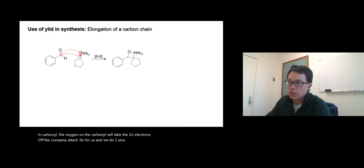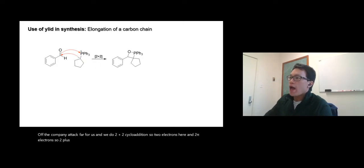We do a 2+2 cycloaddition—two electrons here and two pi electrons, so 2+2. The next step is we do retro 2+2, so 2+2 is a cycloaddition making a ring. Retro means break the ring, so it's the opposite direction.